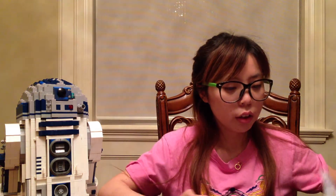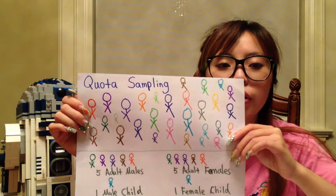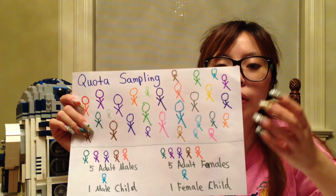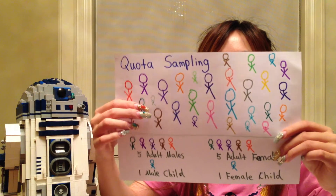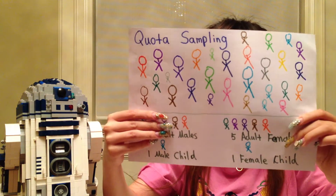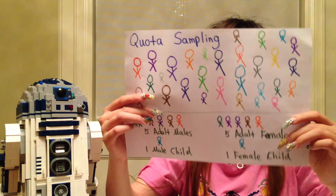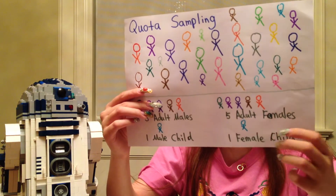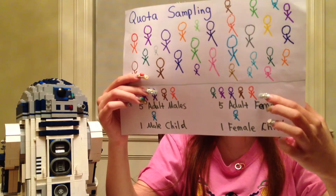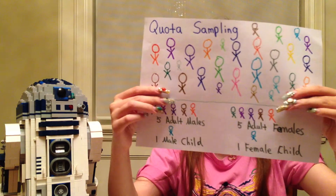Then I'm going to talk about quota sampling. Quota sampling first identifies relevant categories of people, like male, female, or age group. Then you decide how many to get in each category. For example, if there are 60 people and the interviewer wants 12 for the sample, he gets five adult females, five adult males, one female child, and one male child — four categories in total.